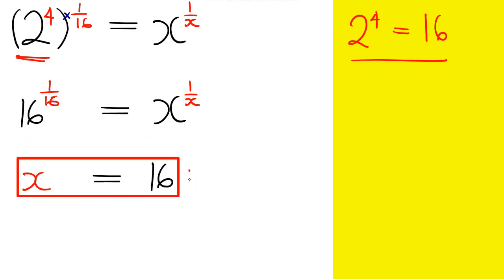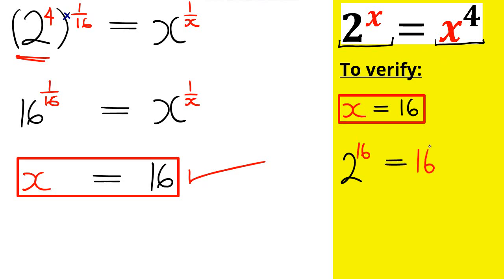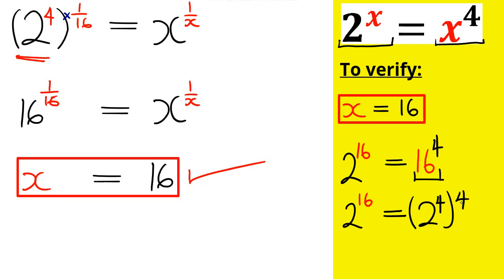To check and verify that x is actually 16, we go back to the question: 2 raised by the power of x equals x raised by the power of 4, and insert 16 wherever we find x. We write 2 raised by the power of 16 equals 16 raised by the power of 4. Now, 16 is the same as 2 raised by the power of 4, so the right-hand side becomes 2 raised by the power of 4 in brackets, then raised by the power of 4 outside. Applying the index rule, 4 multiplied by 4 gives 16, so we have 2 raised by the power of 16 equals 2 raised by the power of 16. The left-hand side equals the right-hand side, confirming that x equals 16.